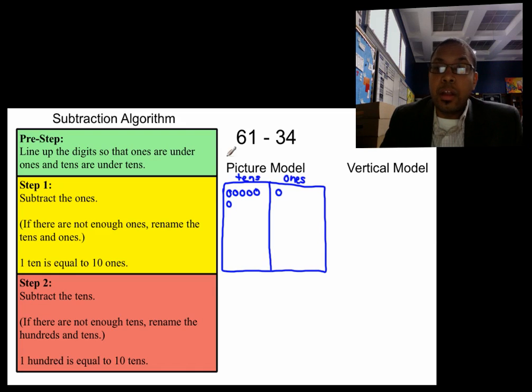For the vertical model, all we're going to do is start with sixty-one, start with our whole. We're going to draw our lines just to make sure everything stays neat. And we're going to subtract thirty-four. Thirty-four is going to start in the tens place. There are no more numbers, so we put our horizontal line. And then we are subtracting thirty-four, don't forget about that. It's very important.